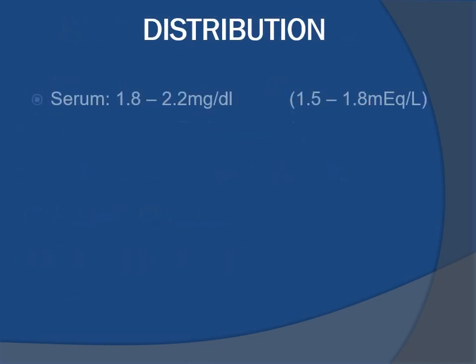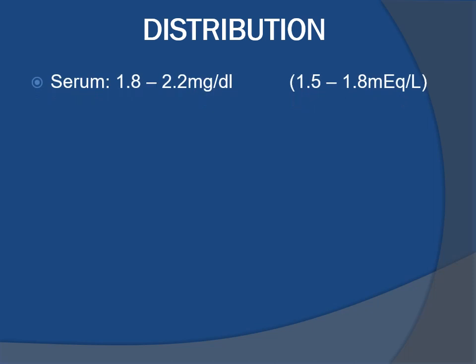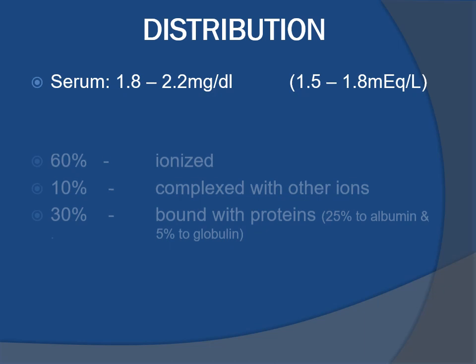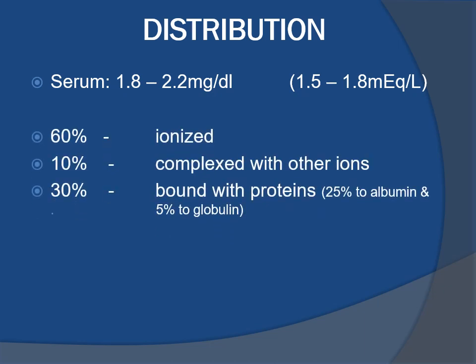Distribution of magnesium: the concentration of magnesium in serum is 1.8 to 2.2 milligrams per deciliter, or 1.5 to 1.8 milliequivalents per liter. Of serum magnesium, 60 percent is found in free or ionized form, 10 percent is complexed with other ions, and 30 percent is bound with proteins — 25 percent of which is bound to albumin and 5 percent to globulin.